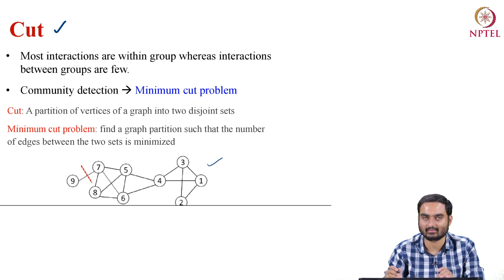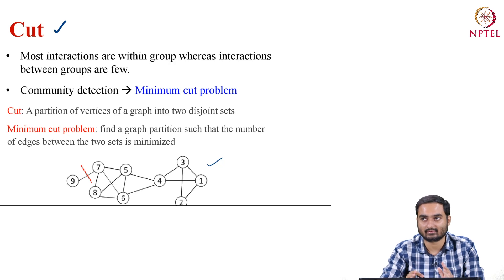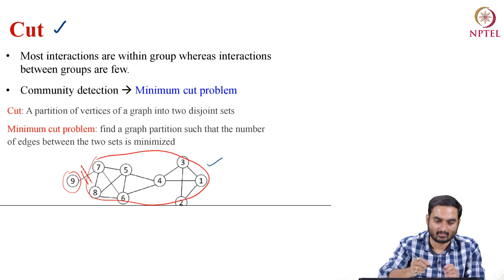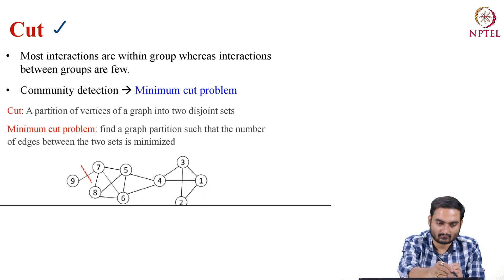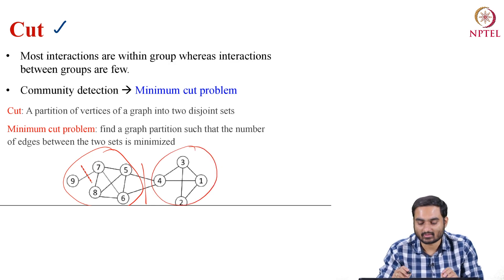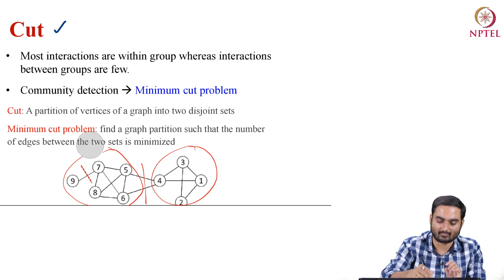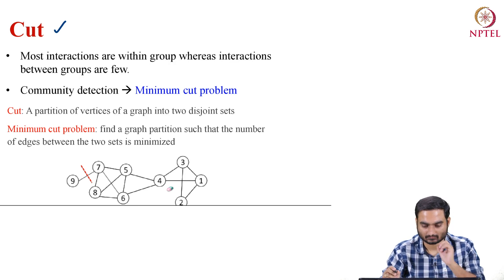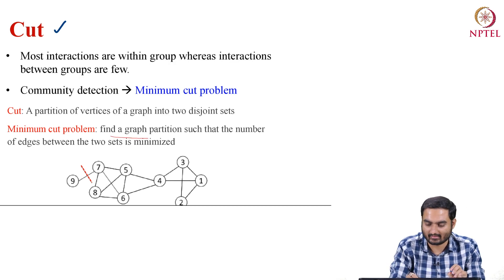The idea is that you have a graph and you want to identify edges which, upon deletion, create two different partitions. For example, if I cut here, you get one partition and the remaining is another partition. The min-cut problem is to find such a cut which is minimum — find a graph partition such that the number of edges between the two sets is minimized.